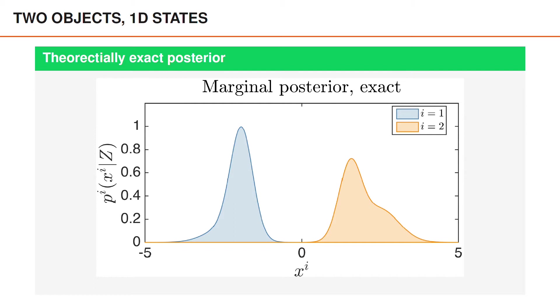In common to all three algorithms is that we wish to approximate the posterior density. So here we have illustrated the theoretically exact marginal posterior densities for two objects. On the left we have the first object in blue and on the right the second object in orange.